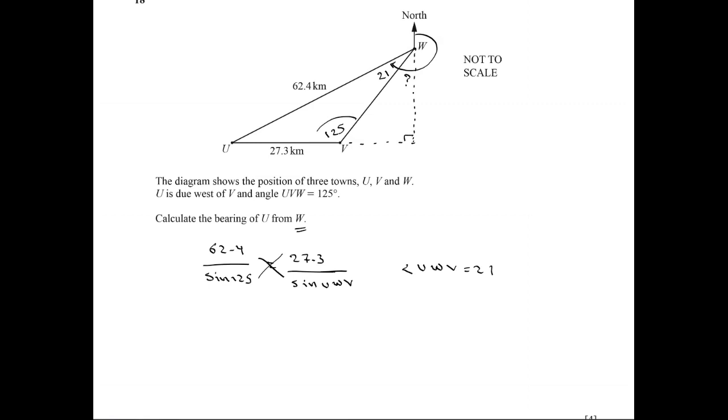How to find this angle? 125 is an exterior angle, so it equals 90 plus the missing angle. The bearing will be 180 plus 21 plus 125 minus 90, which is the measure of this angle.